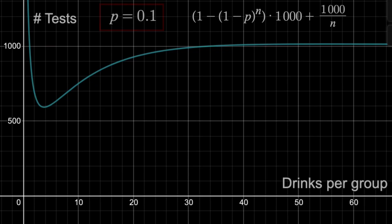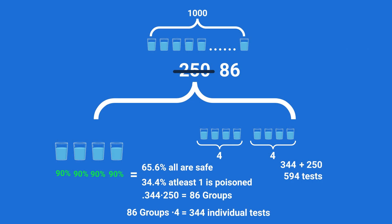Remember, 1,000 tests was that worst-case scenario testing every drink individually. But as you can see, by grouping we can do much better. In this case we see the minimum integer value of n is here at 4,594. And this reflects what we saw earlier, with the 4 drinks per group and the 594 tests.